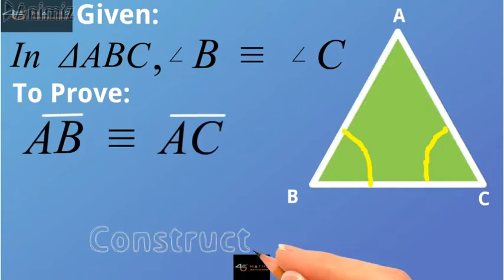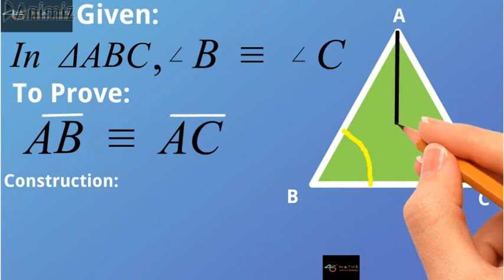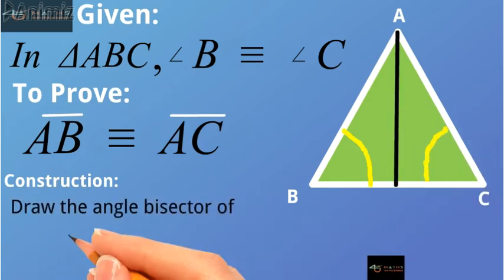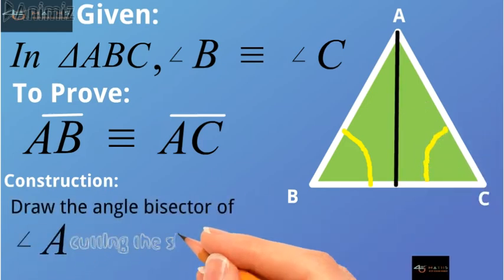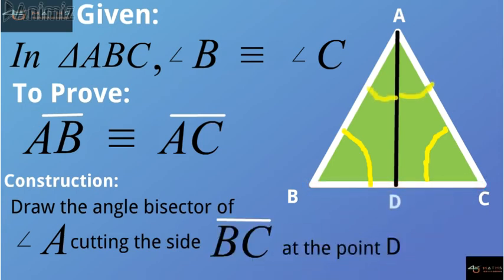Construction: We draw the angle bisector of angle A cutting the side BC at point D, and label the angles as shown in the figure.